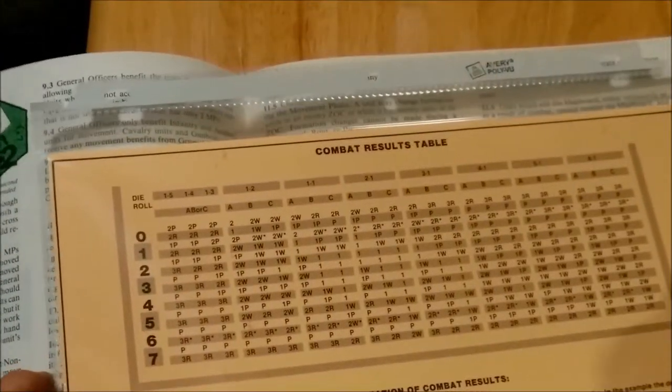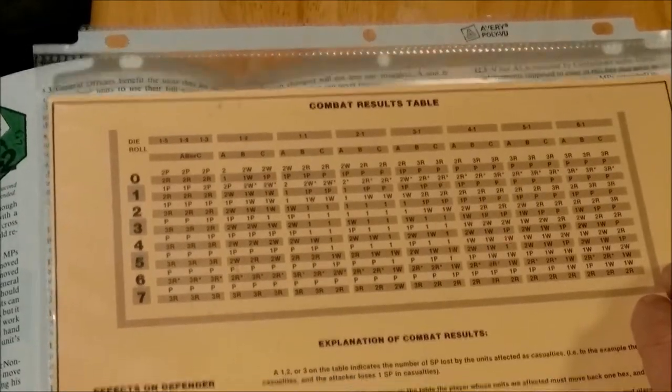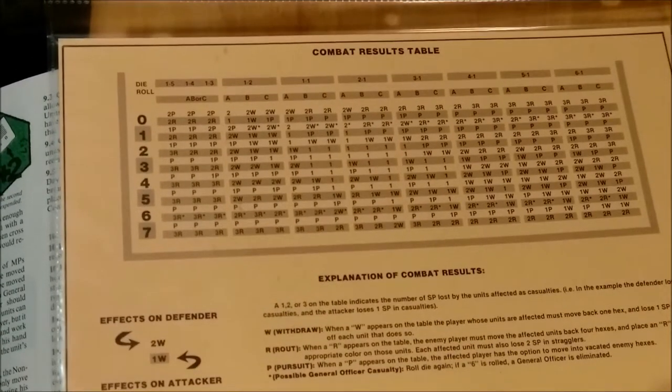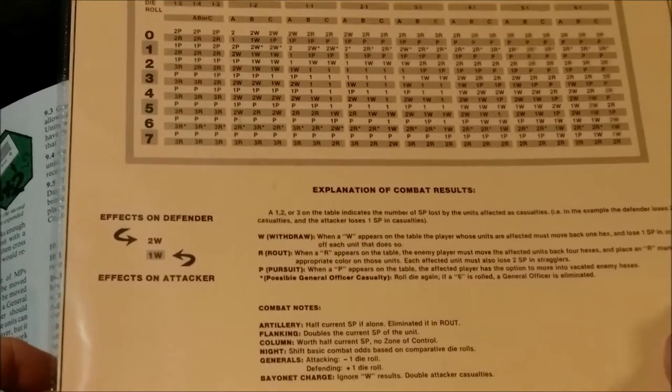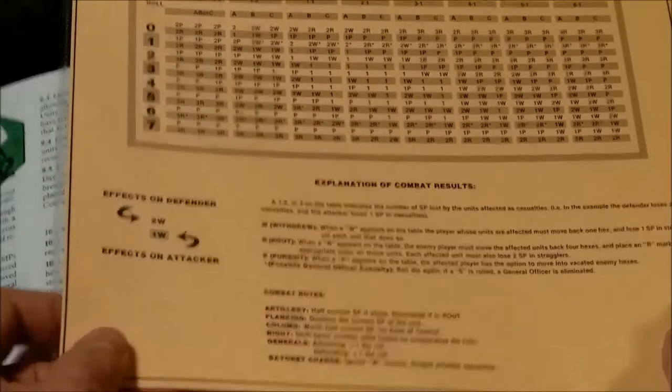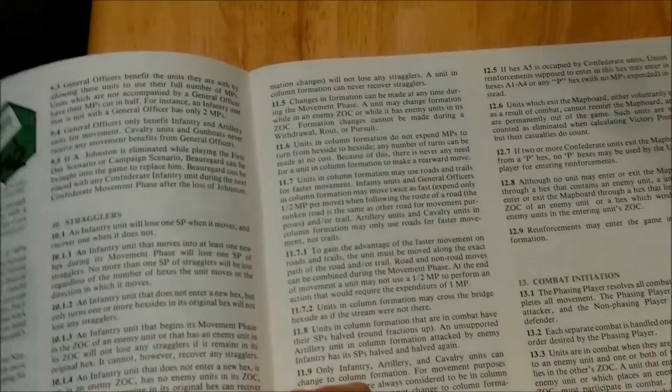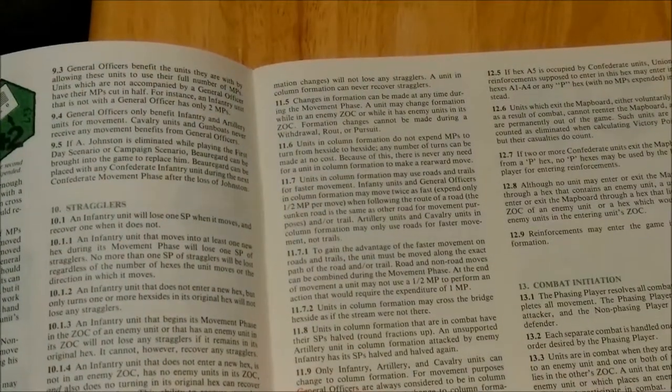On the back of the player aid, I know I'm still supposed to be talking about the rule book. We have a combat results table and the explanation of the combat results and what some of the modifiers are. Anyway, that was a play aid. Now, back to the actual rule book.